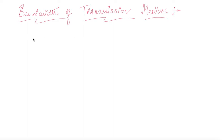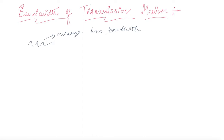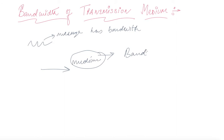The message signal has some bandwidth — that is, the difference between the maximum and minimum frequencies. It is important to notice that different types of transmission media also have a bandwidth. This is what we know as the bandwidth of the transmission medium.